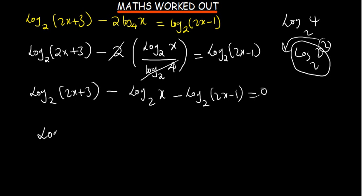So this gives us log in base 2. We have got the 2x plus 3. So these are subtracting, they'll come in the denominator. First of an x, you'll just get this. It is subtracting also of this term. So that would be 2x minus 1. That would be equal to 0.